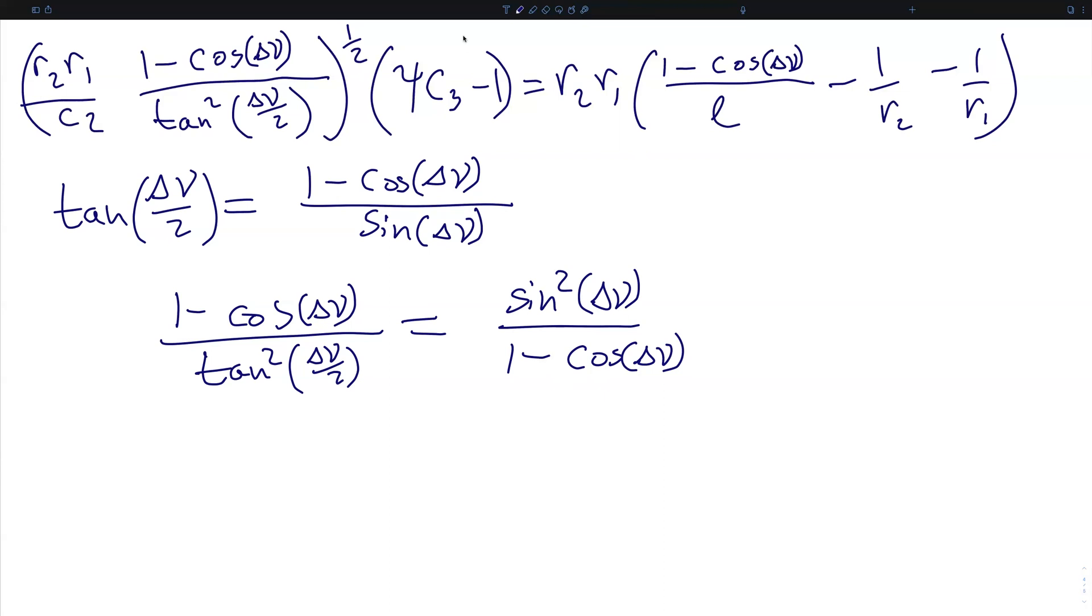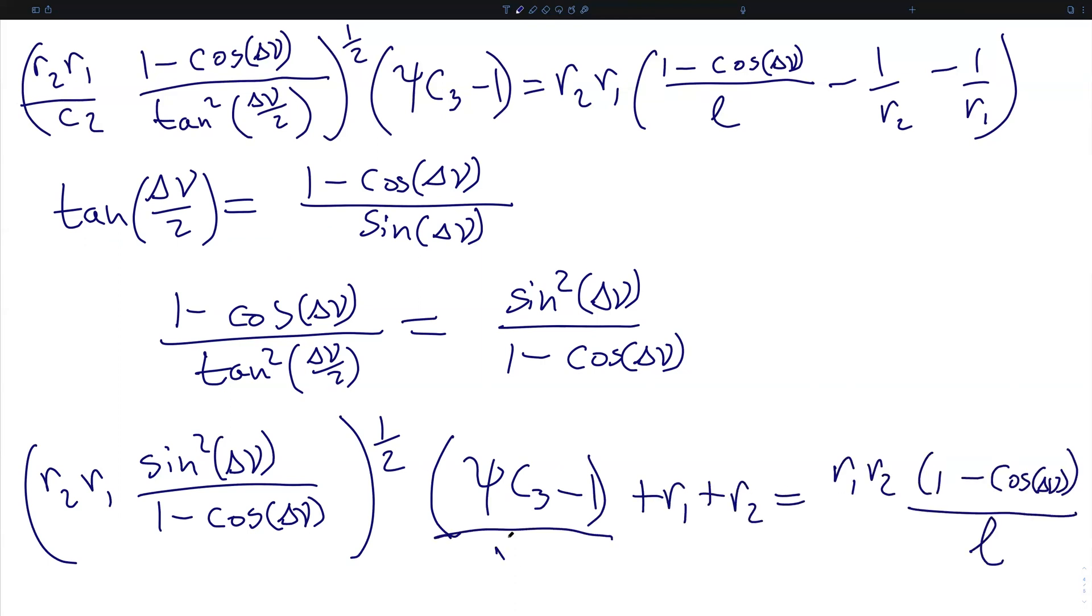So that means that we can rewrite this whole expression as r2 r1 times sine squared delta nu over 1 minus cosine delta nu, quantity square rooted, times psi c3 minus 1 over root c2.